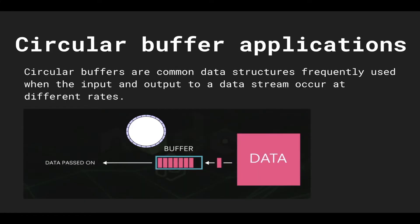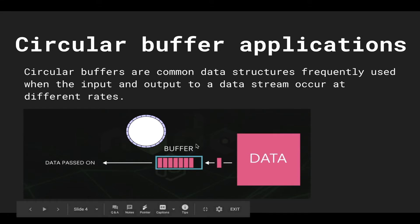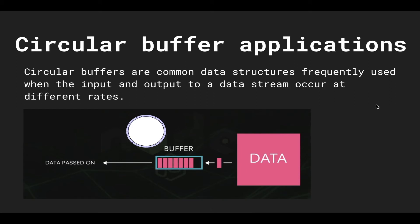Circular buffers are common data structures that are frequently used when the input and output to a data stream occur at different rates. For example, some sort of data source can be writing to a buffer — which can be thought of internally as a ring — while some sort of destination reads from it. Circular buffers are good when you need to read and write at different rates, allowing you to buffer data. With overwriting enabled, you can have a fixed size buffer that doesn't grow too big, as long as you're okay with overwriting stale data.